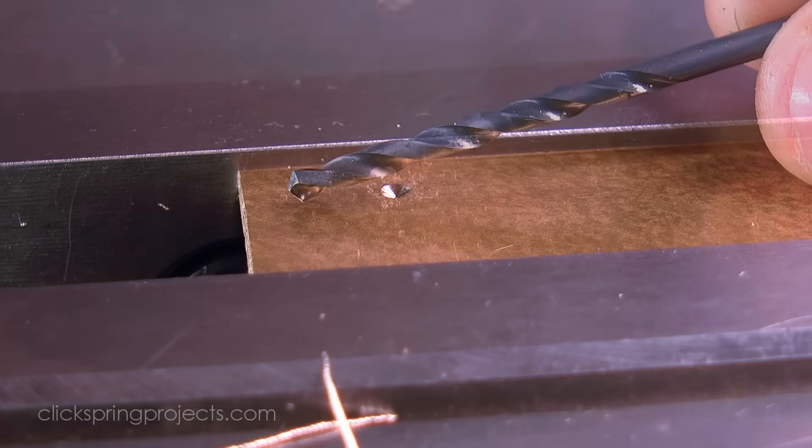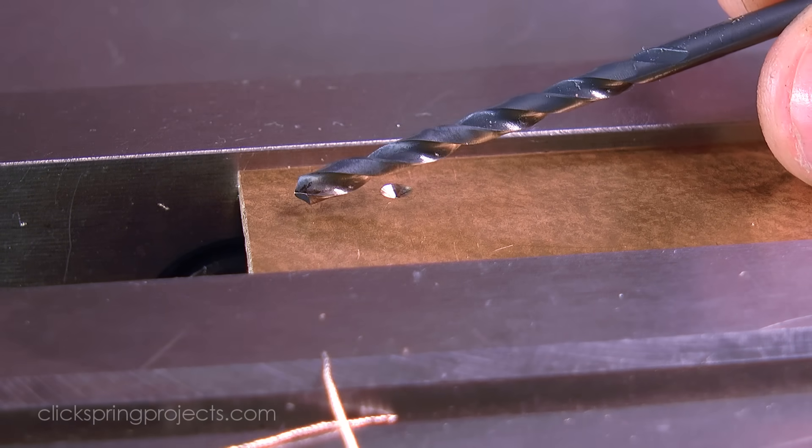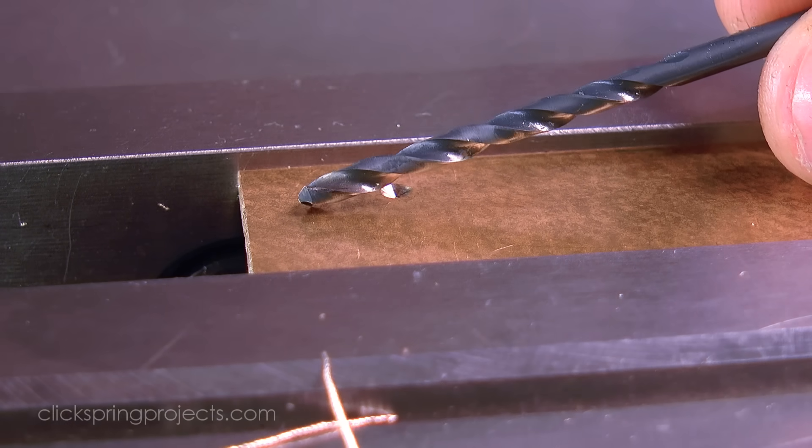Once positioned, the hole to be jeweled is drilled undersized by 0.1 millimeters to give the reamer some material to cut.